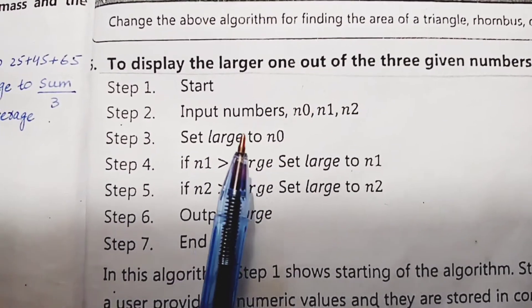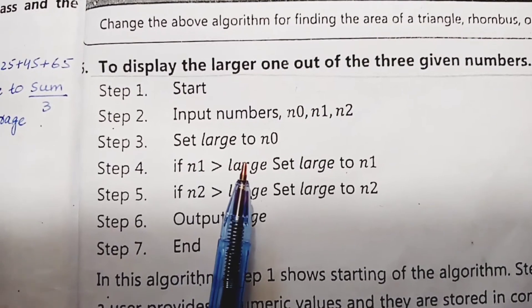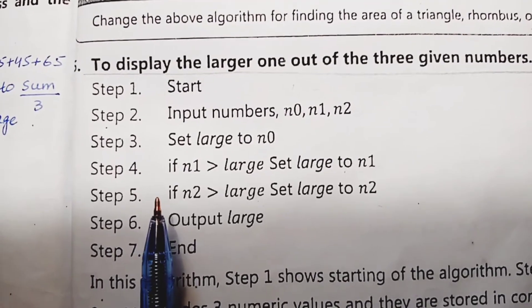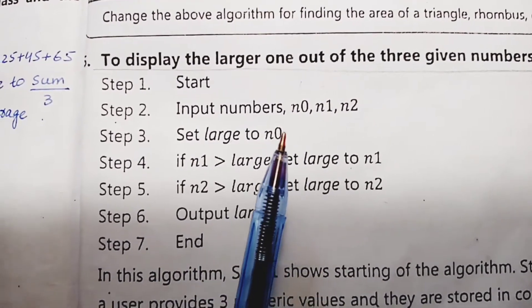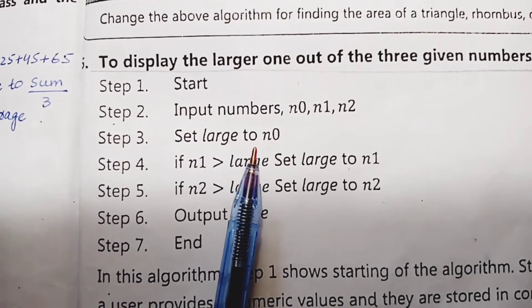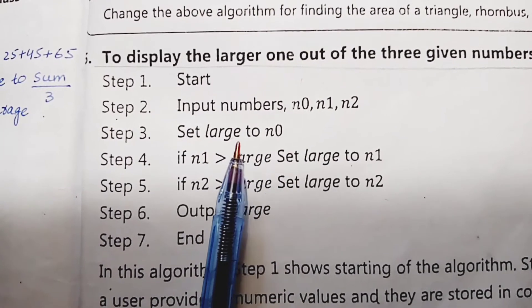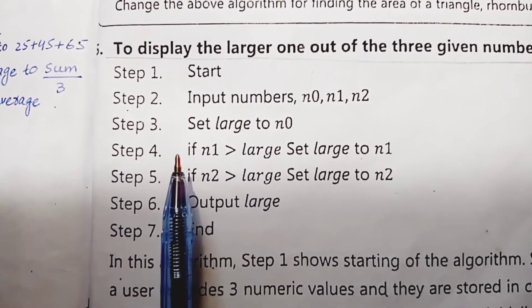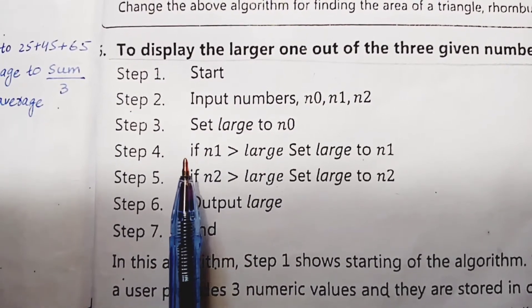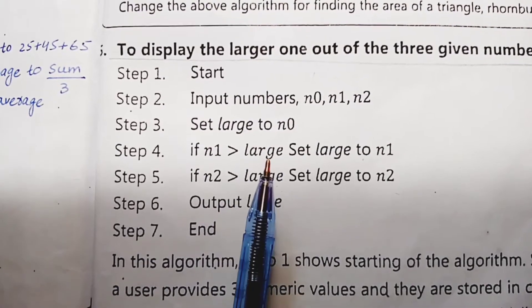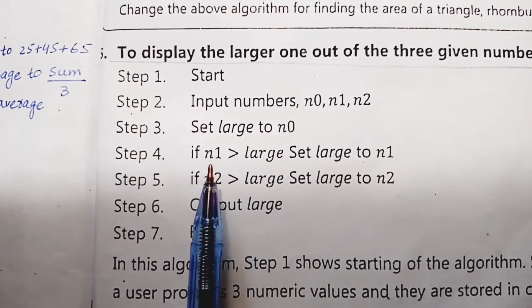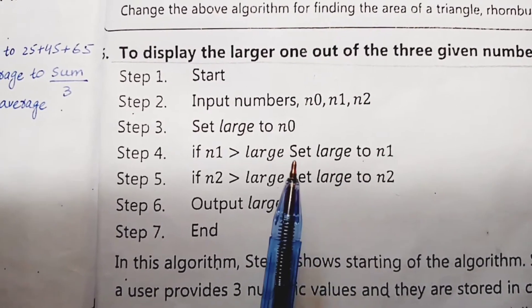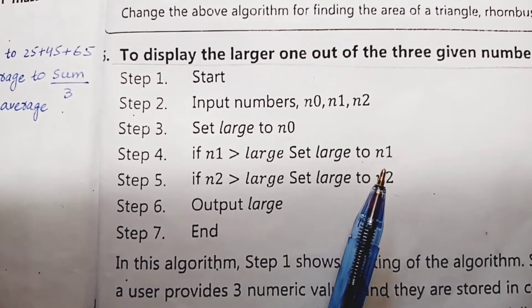After that, we will find the larger number using comparison. In steps number 4 and 5, conditions are used with keyword IF. We have supposed n0 is the larger number. Using this supposed result: if n1 is greater than large (n0), then set large to n1. In this case, the larger number becomes n1.